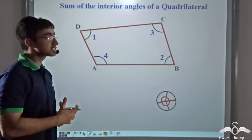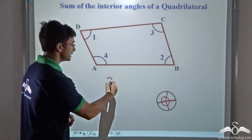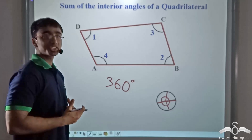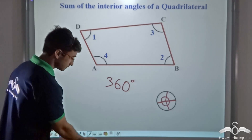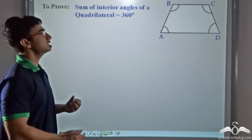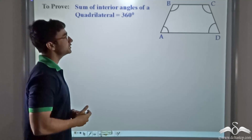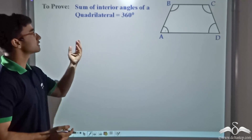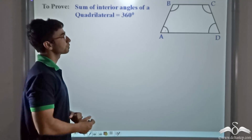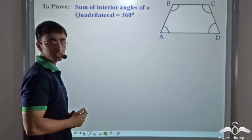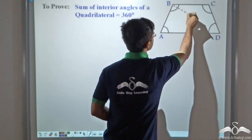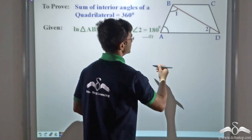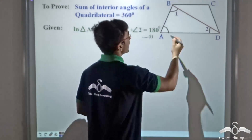Now let us prove this mathematically. I have taken any quadrilateral ABCD and marked the angles as A, B, C, and D. To prove that the sum of interior angles equals 360 degrees, I first join B and D. Once I join BD, I get two triangles: triangle ABD and triangle BCD.